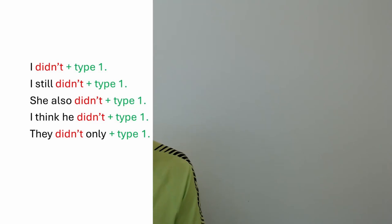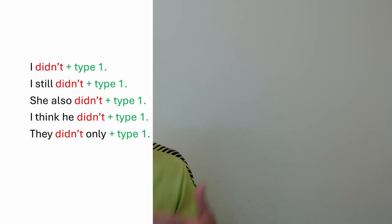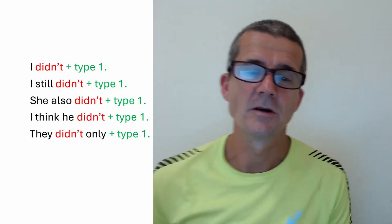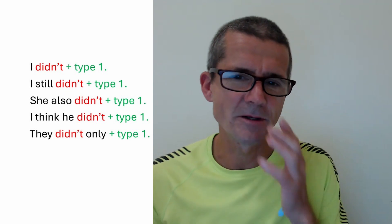Here are some chunks that can help you, especially with the first problem. 'I didn't' plus type one. 'I still didn't' plus type one. 'She also didn't' plus type one. 'I think he didn't' plus type one. And 'they only didn't' plus type one — that last one is a little bit different to the others, but we won't go into it today.